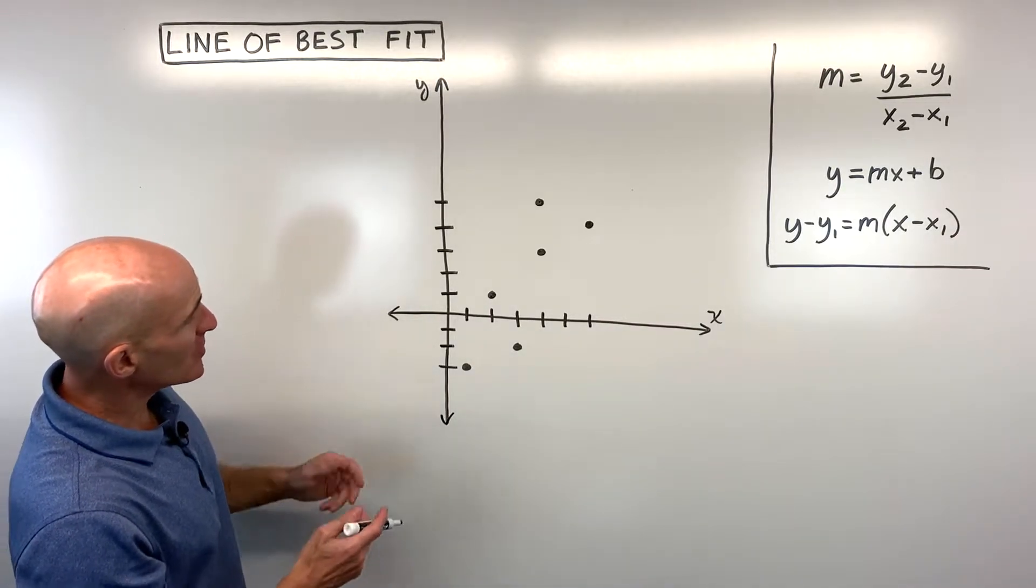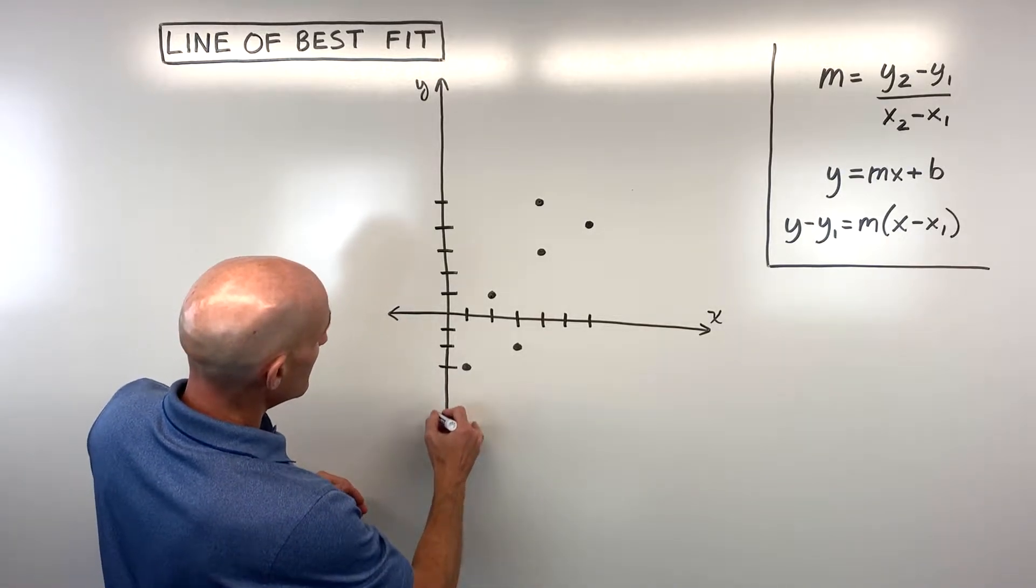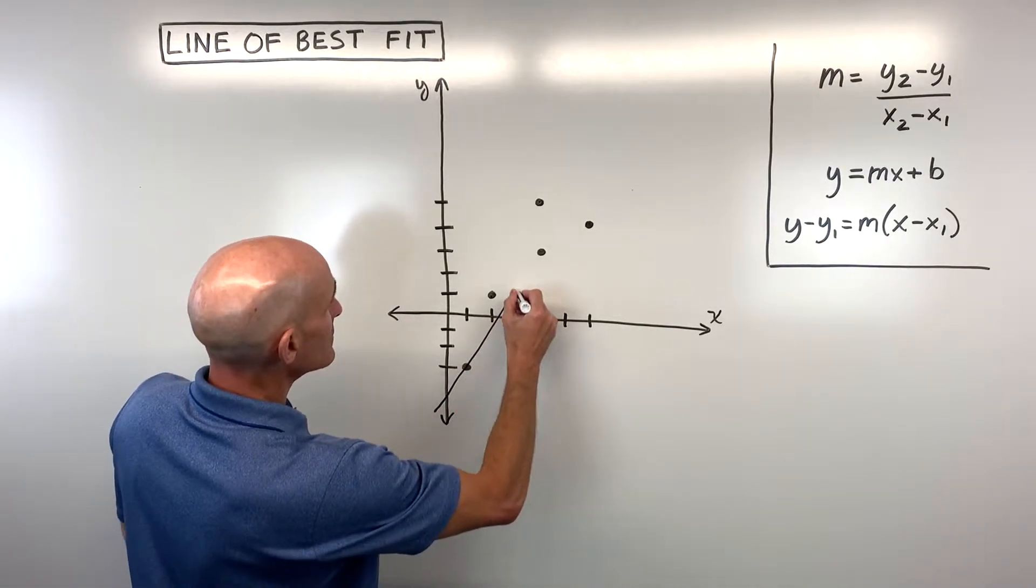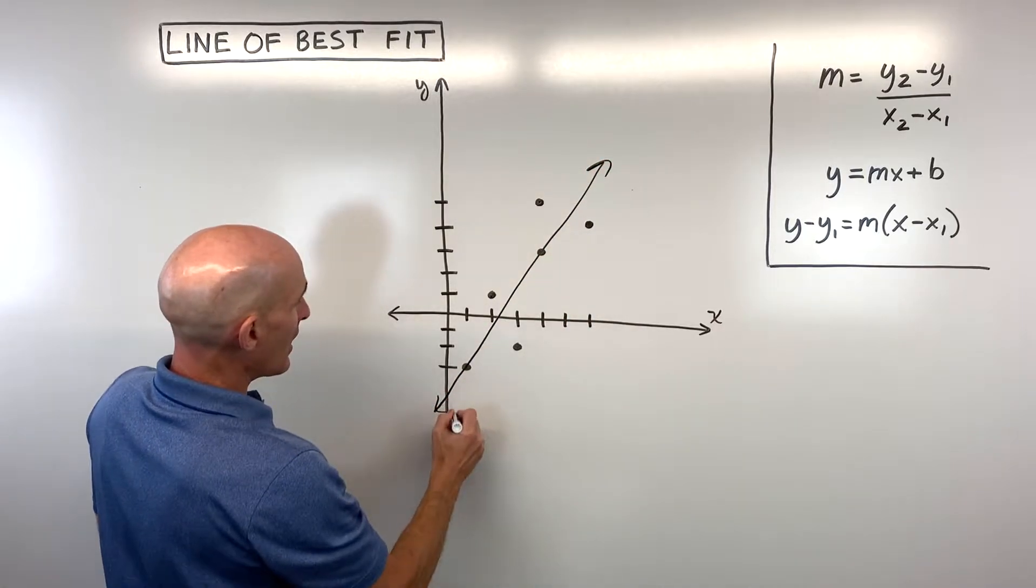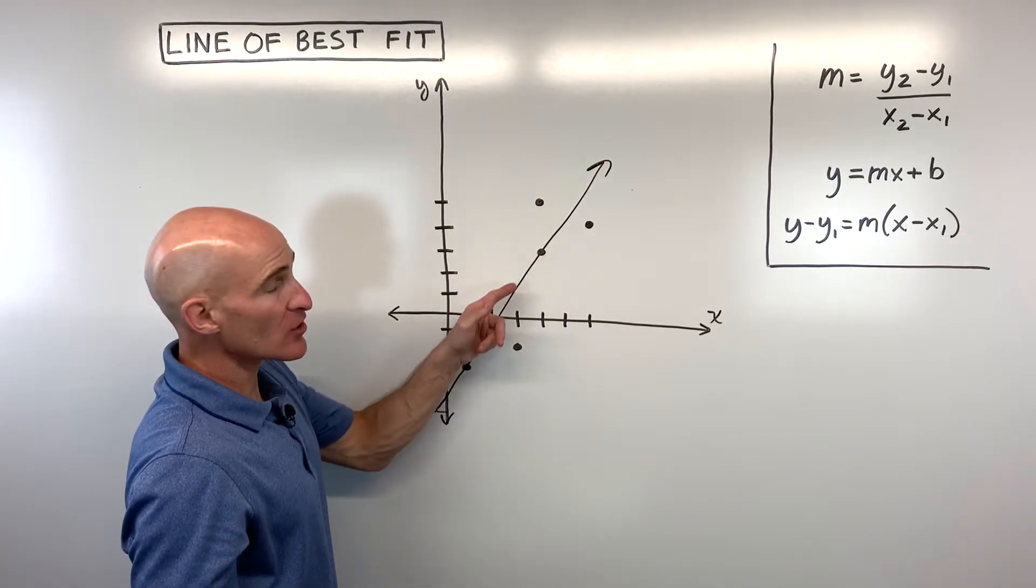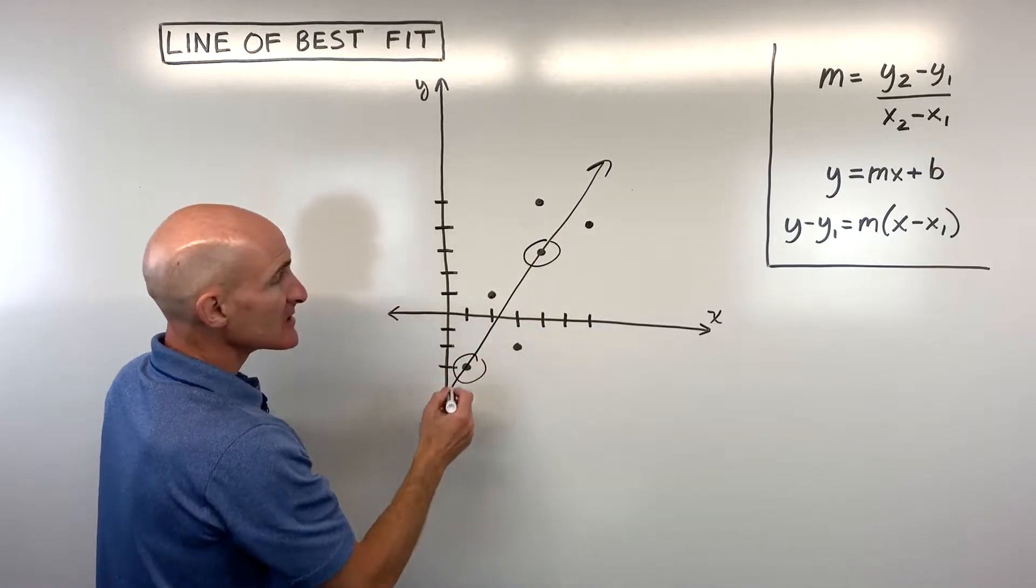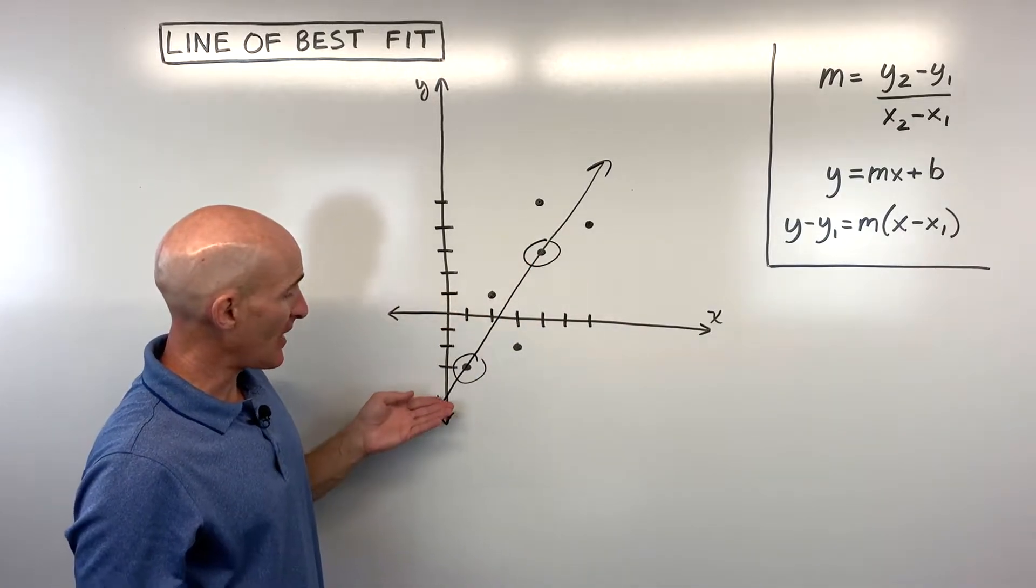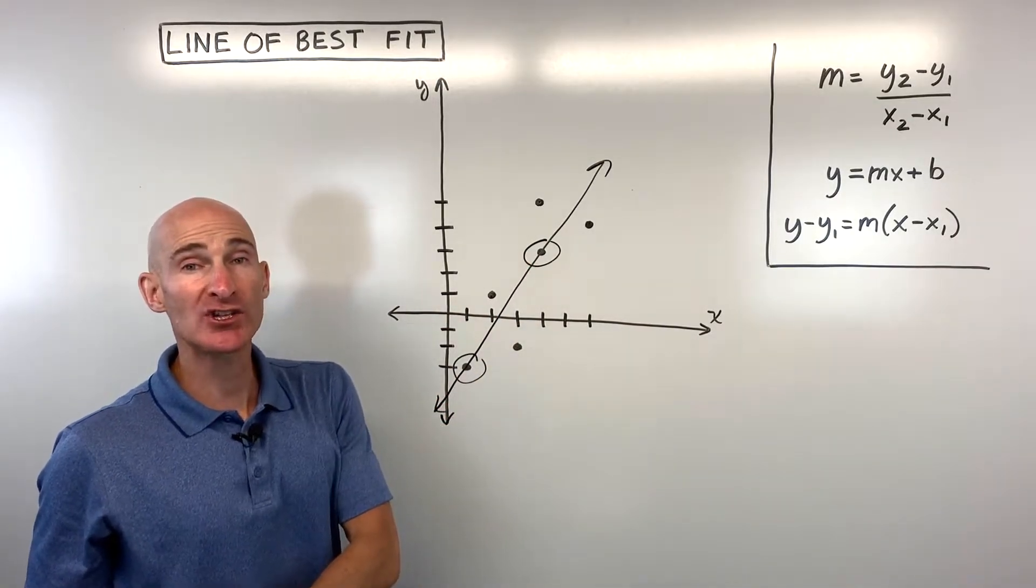Now, if I was doing this one here, I might draw a line of best fit something like this. And I can see that there's two points here that are on the line. I'm going to use these two points to help me to find my slope and to help me to find my y-intercept and to get a good equation of the line.